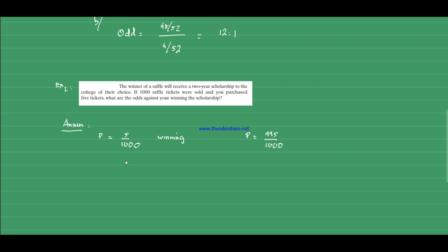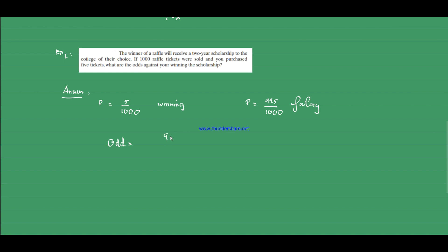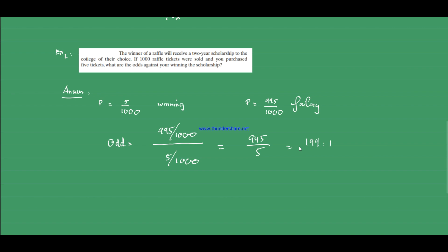Now calculating the odds against winning: we set up the ratio of failure over success, which is 995/1000 divided by 5/1000. This simplifies to 995 over 5, which gives us 199 to 1. That is the odds against winning — 199 to 1.